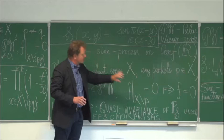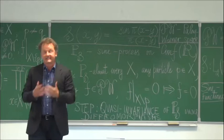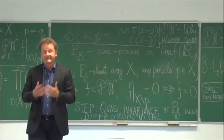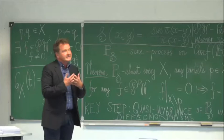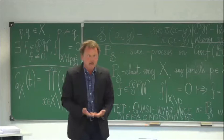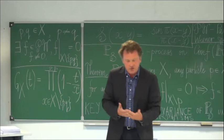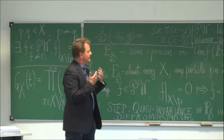That is to say, any Paley-Wiener function, if it is zero in restriction to the configuration minus one particle, is in fact the identically zero function. Let us not forget that Paley-Wiener functions are entire functions, and therefore all this makes perfect sense. The key step in the argument is the quasi-invariance of the sine process under a sufficiently large group of diffeomorphisms of the line — a certain analog of the Girsanov theorem is valid for the sine process.